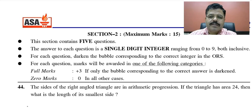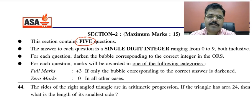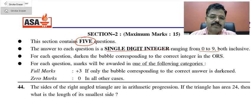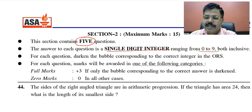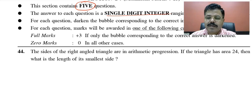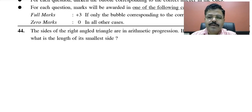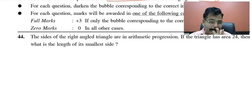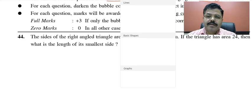This section has 5 questions, and these 5 questions are single digit integers from 0 to 9. For each correct response you will get 3 marks, but if there is a wrong answer you will get 0 — there are no negative marks. The first question: the sides of a right angle triangle are in arithmetic progression.